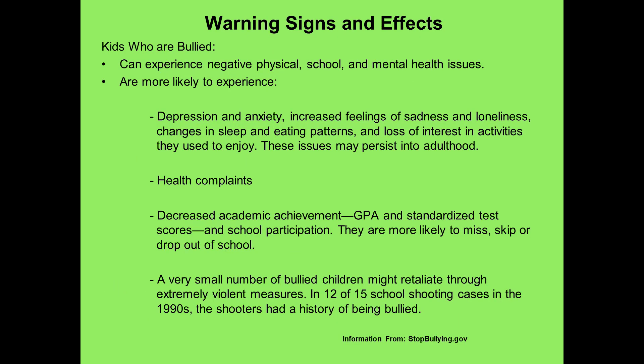Here are some warning signs and effects. Kids who are bullied experience negative physical, school, and mental health issues. They're more likely to be depressed and have anxiety, with accompanying health complaints, and their academic achievement can be decreased — it's hard to concentrate in school when you're feeling anxious or depressed about being bullied. While a very small number of bullied children might retaliate through extreme violent measures, it's important to know that 12 out of 15 school shooting cases in the 1990s involved a shooter who had a history of being bullied. These can have long-lasting effects and result in very traumatic experiences for others as well as themselves.